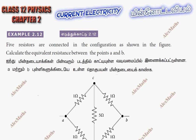Hi students, this is Alex here. Example 2.12: 5 resistors are connected in the configuration as shown in the figure. Calculate the equivalent resistance between the points A and B.